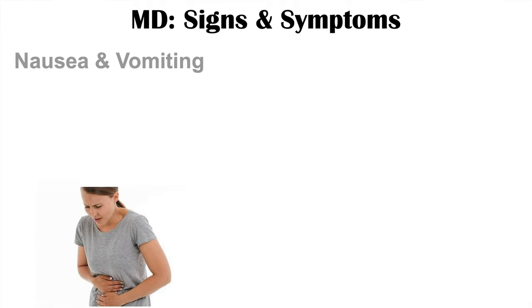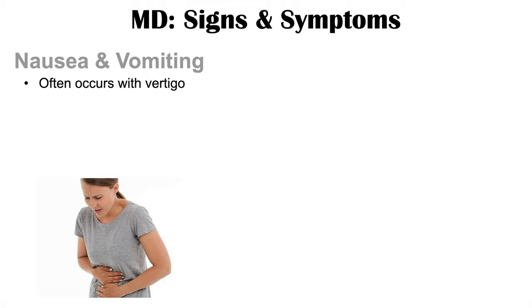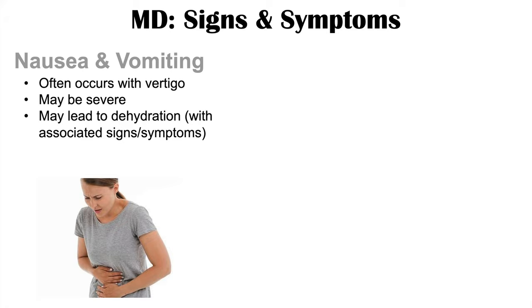Some other findings can include nausea and vomiting, which often occur with the vertigo. You can imagine that if you feel the room spinning for hours, the patient can feel very sick, become nauseous, and possibly vomit as well. This may be severe enough to lead to dehydration, which brings associated signs and symptoms such as dry mucous membranes.